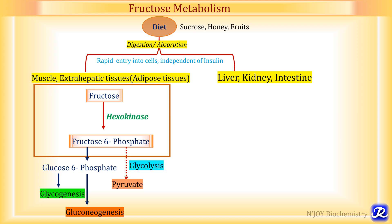So there are three fates of fructose 6-phosphate depending on whether the body is in a well-fed condition or in fasting and starvation. In the well-fed condition, fructose 6-phosphate is channeled towards glycolysis and glycogenesis, while in fasting and starvation it is channeled towards gluconeogenesis.